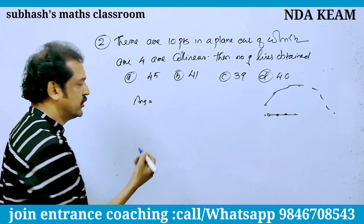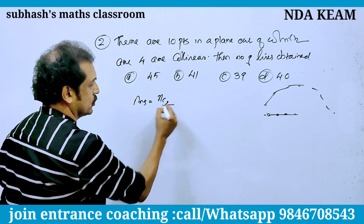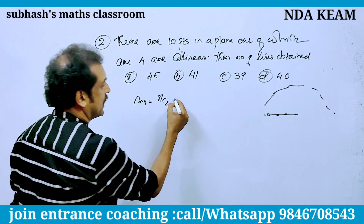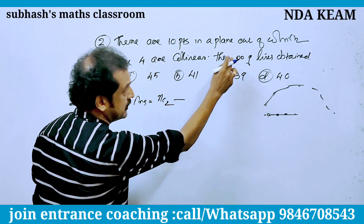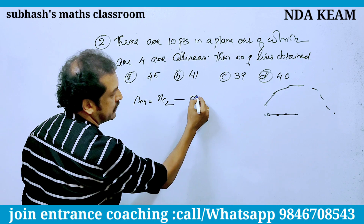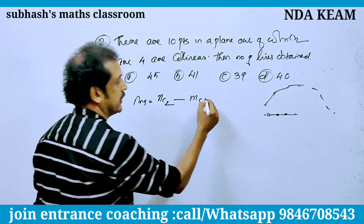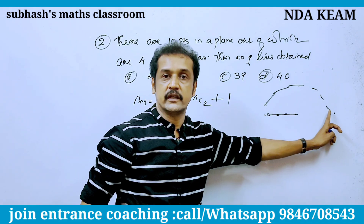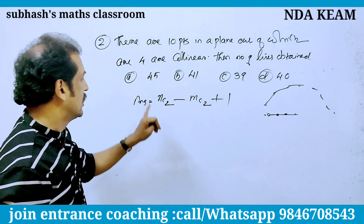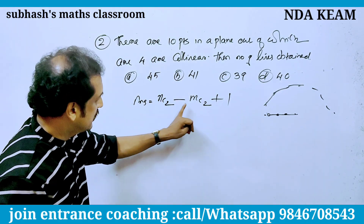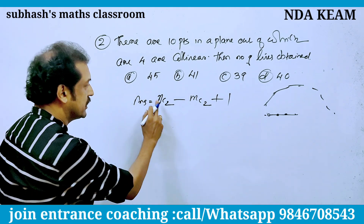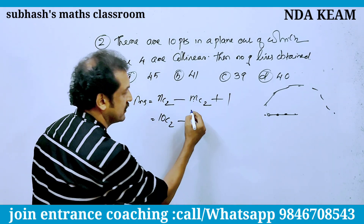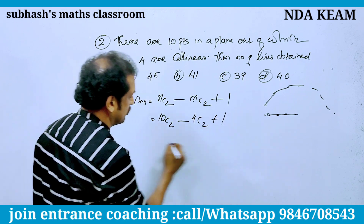Here is the formula: number of lines = Nc2. If M points are collinear: Nc2 minus Mc2 plus 1. N is total, that is 10C2. M is the collinear points, that is 4. So: 4C2 plus 1.